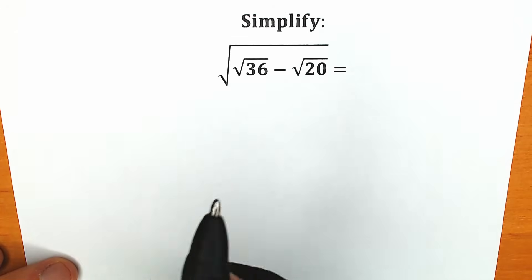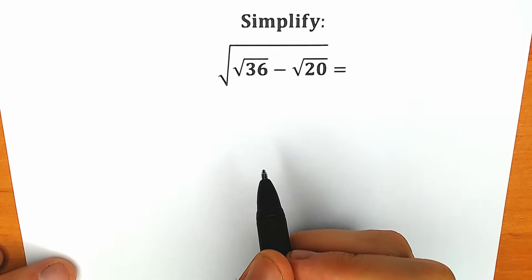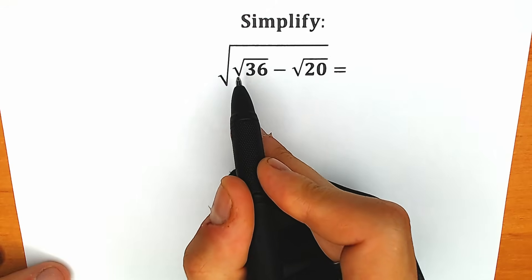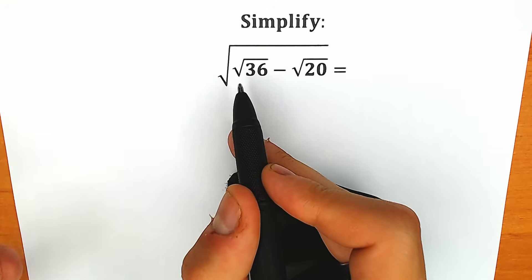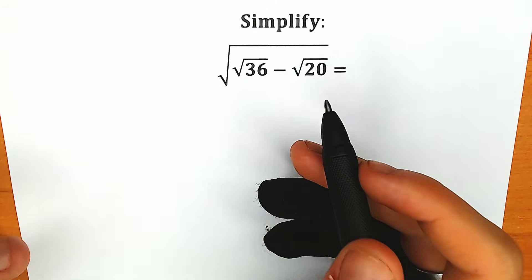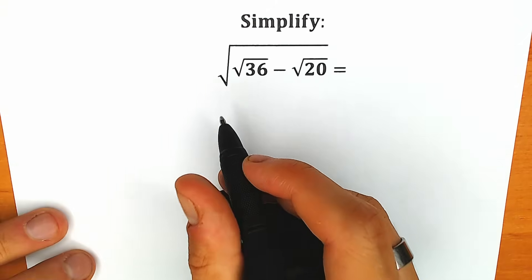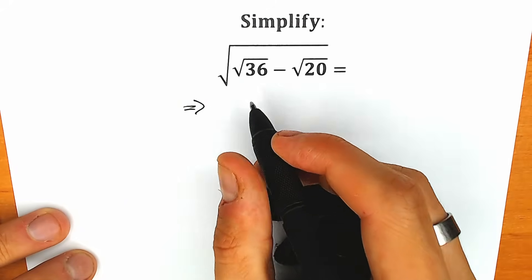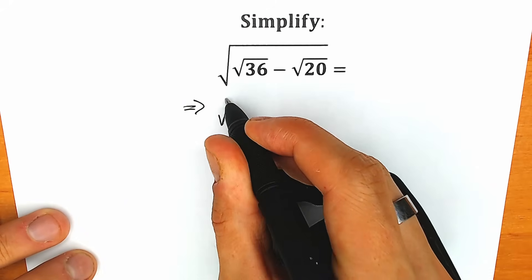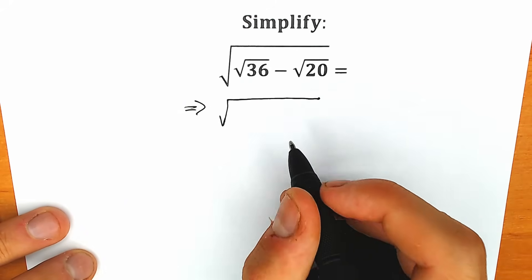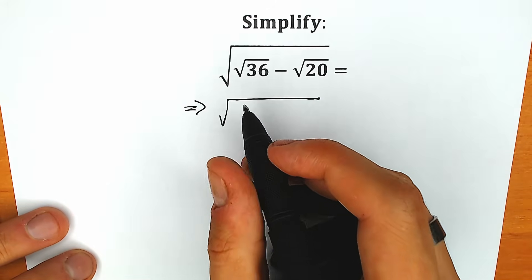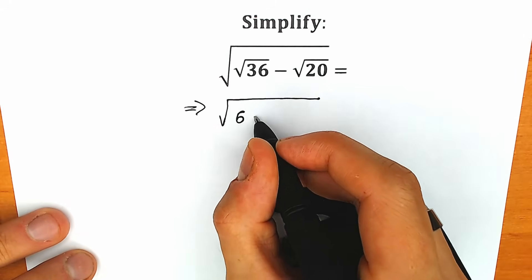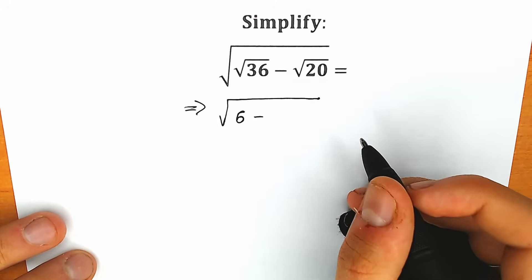So how can you solve this question correctly, step by step? First of all, square root of 36 — this is our table case — is equal to 6. So let's start with that. We have the square root of the square root of 36, which equals 6, so we now have the square root of 6 minus 20.